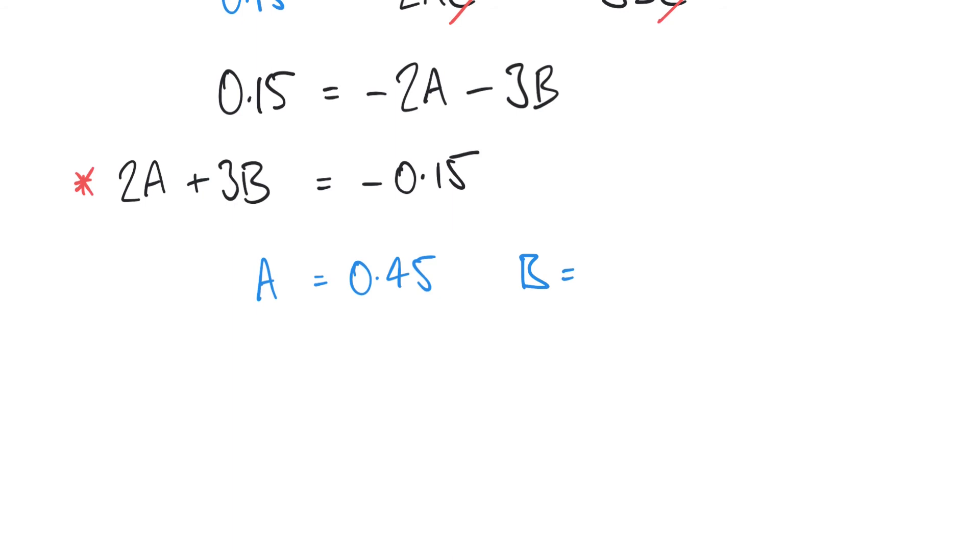But we find that A is 0.45 and B is -0.35, and we can substitute these values back into our general solution to find our particular solution. And so the particular solution in this instance is going to be x = 0.45e^(-2t) - 0.35e^(-3t).